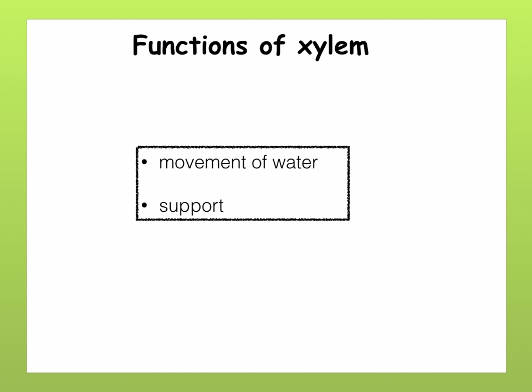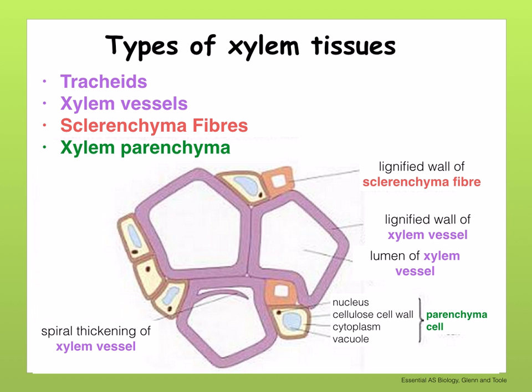The functions of xylem are the movement of water and support. Think about how the structure of xylem helps with these functions as we go along. The different types of xylem tissues are tracheids, xylem vessels, sclerenchyma fibres, and xylem parenchyma. Xylem functions in both transporting water and mineral salts, as well as providing support to the plant.